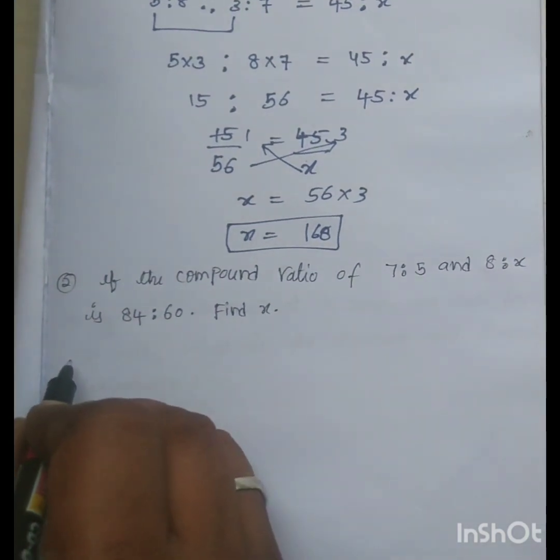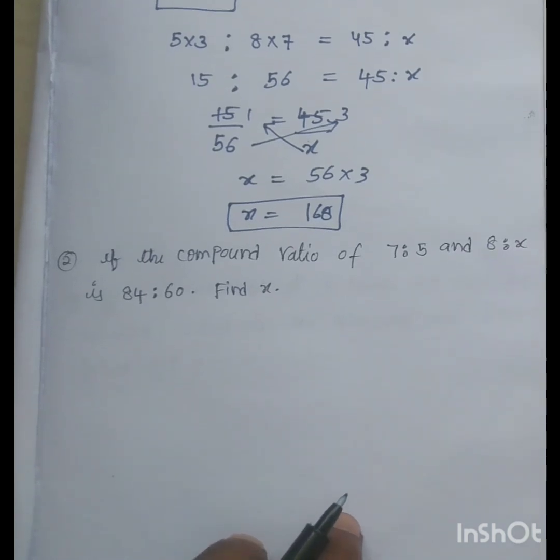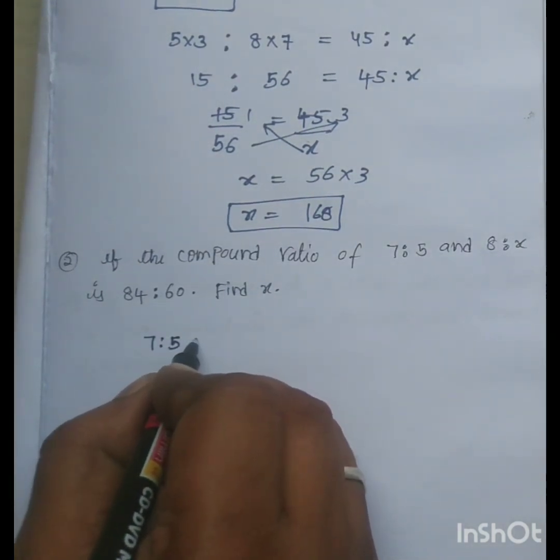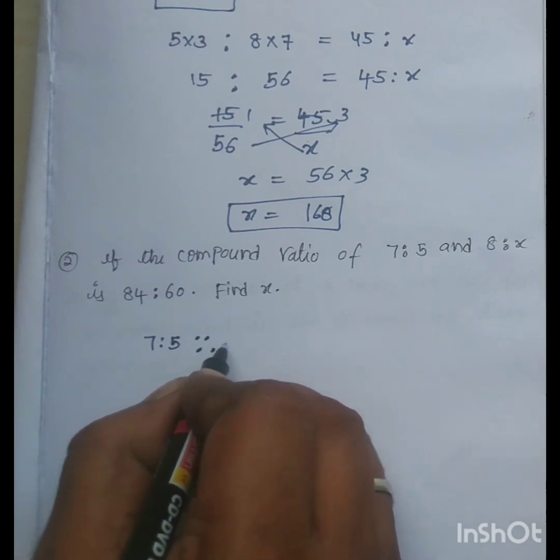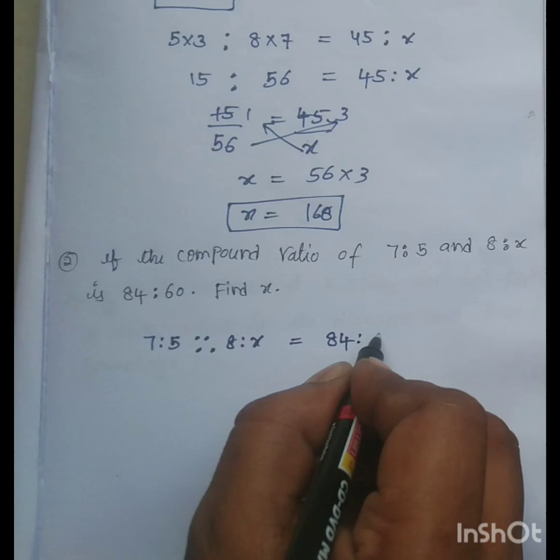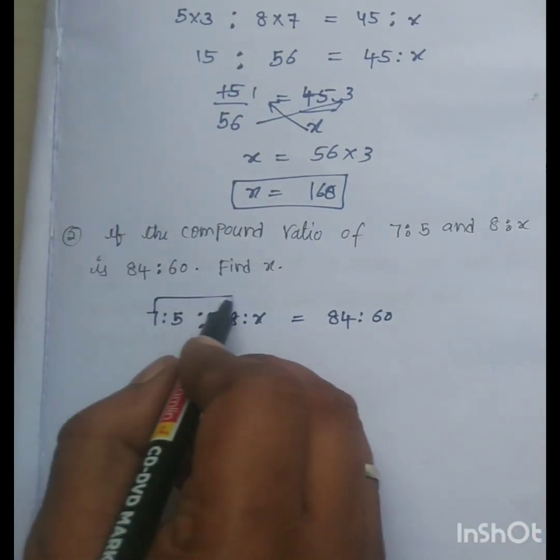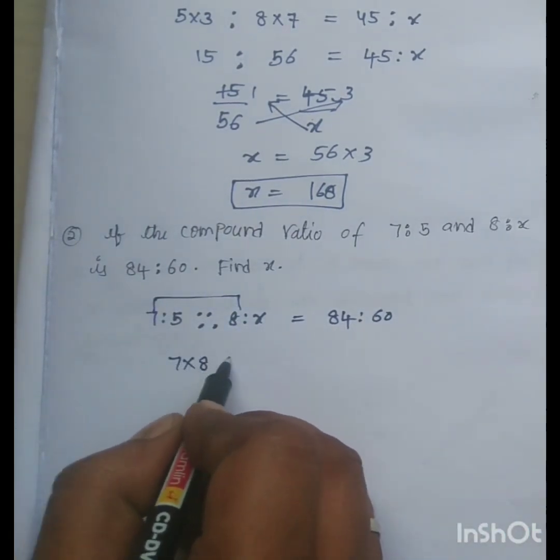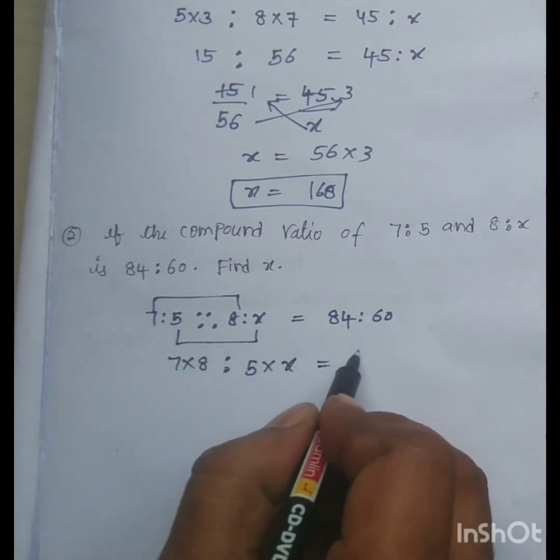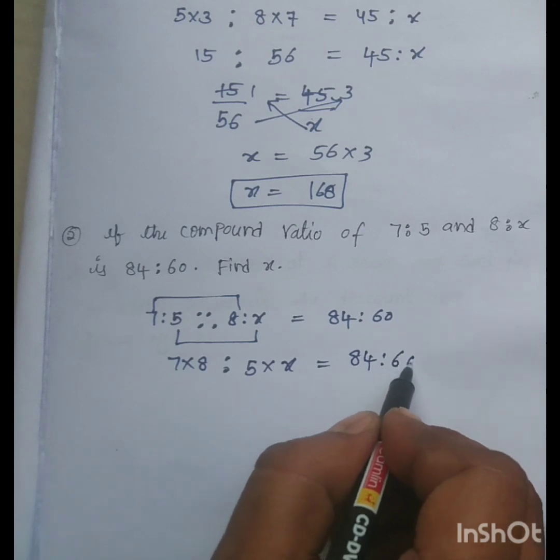Now, the same method, second question. If the compound ratio of 7 is to 5 and 8 is to X is 84 is to 60. Again, product of antecedents, 7 into 8 is to product of consequences, 5 into X is equal to 84 is to 60.